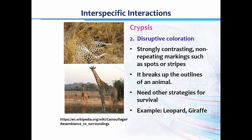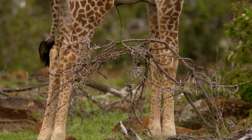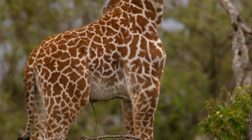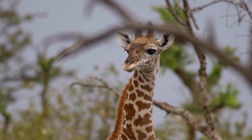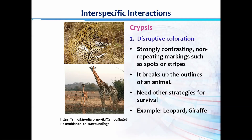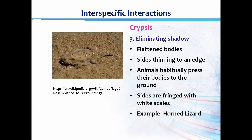The second technique in crypsis is disruptive coloration. Examples include the leopard and giraffe — both have different marks and patterns, where each pattern is different from the next. These spots, stripes, and patterns break up the outline of the animal, so if these animals are seen from far by their predators, the predators wouldn't easily distinguish the outline of their body.